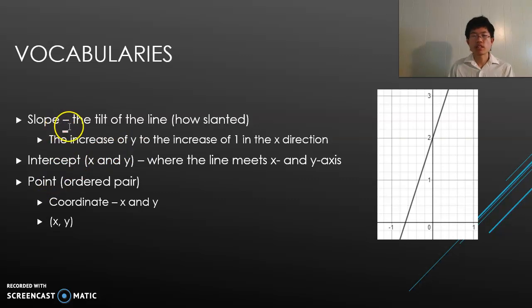Slope is the tilt of the line, sometimes called slanted. It's how the line is slanted like this or like this. The way it's shown is the increase or decrease of y to the increase of 1 in the x-direction. So every time the equation changes 1 in the x-direction, how much would it change in y?